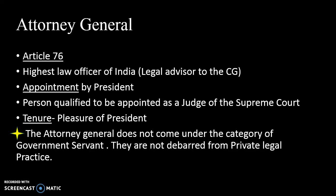To be appointed as Attorney General, a person must be qualified to be appointed as a judge of the Supreme Court. The qualifications are: having held office as a judge of a High Court for five years, or being an advocate of a High Court for ten years, or being a distinguished jurist in the view of the President. Unlike other constitutional bodies, the Attorney General does not enjoy security of tenure and holds office at the pleasure of the President.